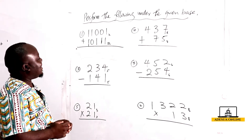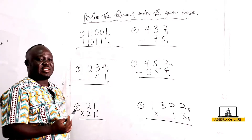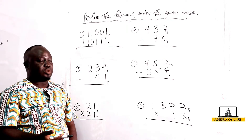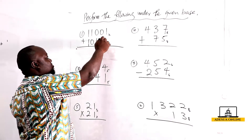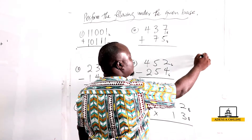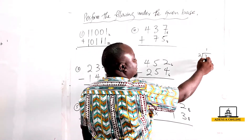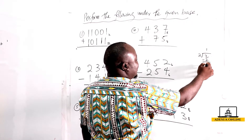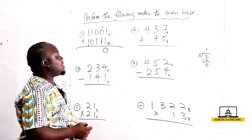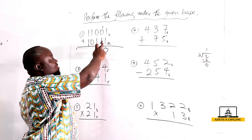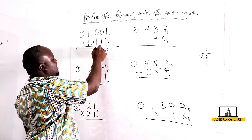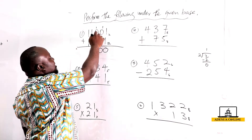We go ahead and add. Any addition or subtraction we do, we are going to do it in base two. So one plus one is two, and two in base two — if I divide two by two, two goes into itself one time with zero remainder, so I have zero and I carry the one.